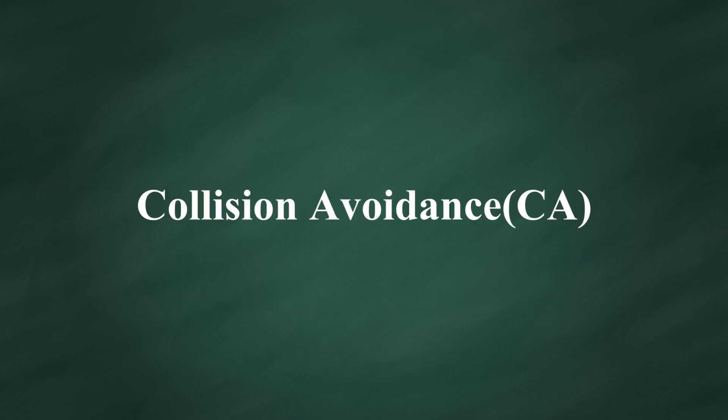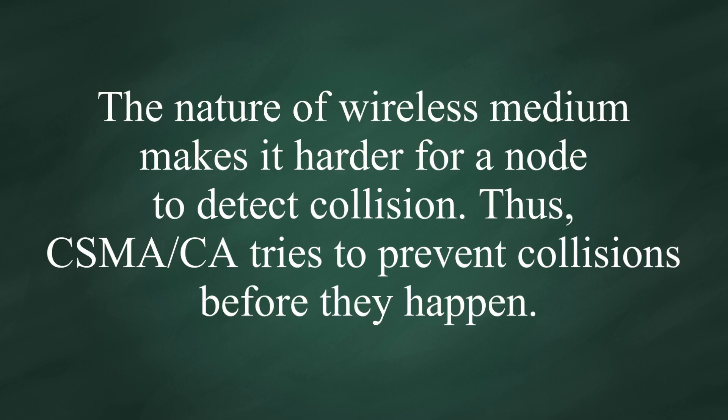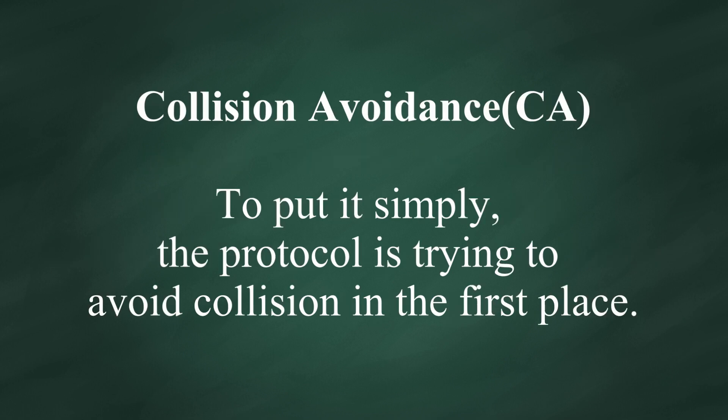Now, let me explain Collision Avoidance. Unlike CSMA/CD, which deals with transmissions after collision has occurred, the nature of wireless media makes it harder for a node to detect collision. Thus, CSMA/CA tries to prevent collisions before they happen. To put it simply, the protocol is trying to avoid collision in the first place.